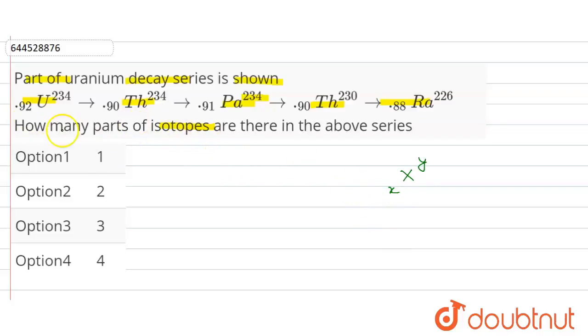So see here, uranium has atomic number 92, and thorium has atomic number 90. Uranium-92 has no isotopes in this series.